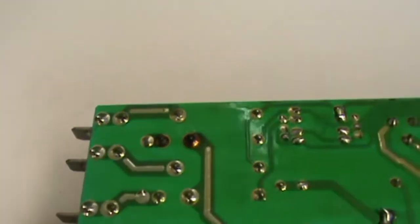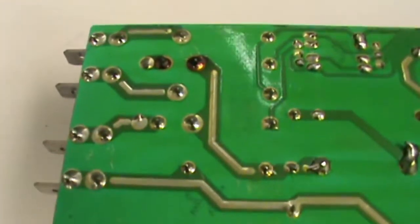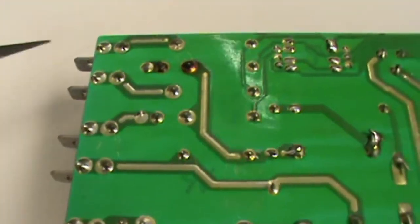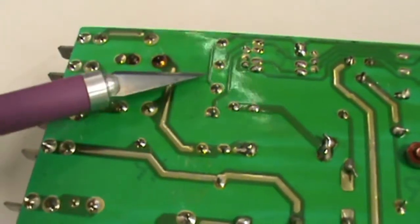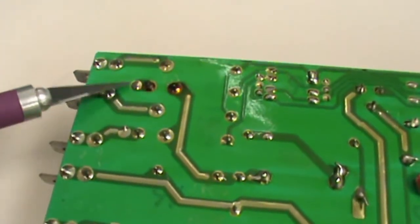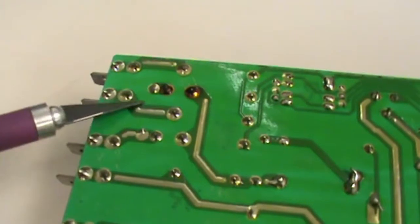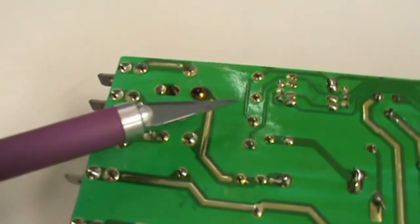Now when you go to measure these you're going to find there's kind of a plastic conformal coating and you're going to have to scrape that or you're not going to be able to measure the resistance across these contacts or the coil.